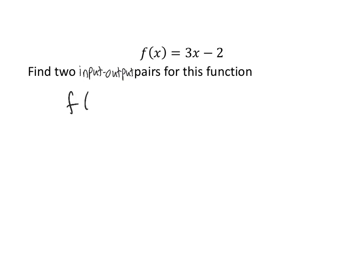In other words, we would like to know, what is f of 4? Well, the way to figure it out is to plug in 4 where the x is in the formula. 3 times 4 minus 2. That's 12 minus 2 is 10. So we would say, f of 4 equals 10.